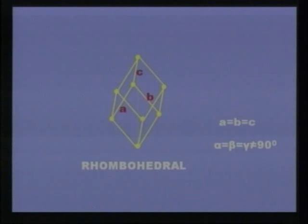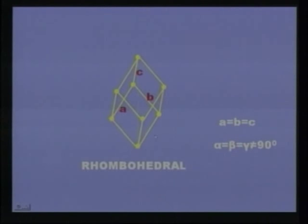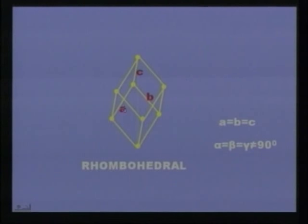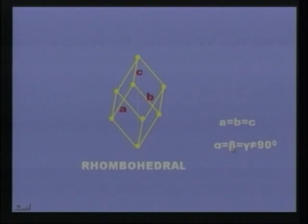In the rhombohedral lattice, the structure looks like a rhombus — that is why it is called a rhombohedral lattice. The sides of the rhombohedral are equal: A = B = C. The angles are alpha = beta = gamma, but they are not equal to 90 degrees.